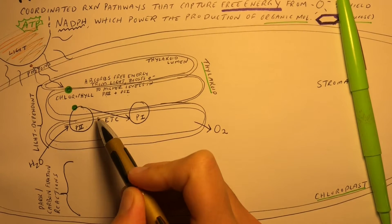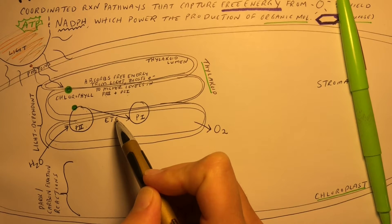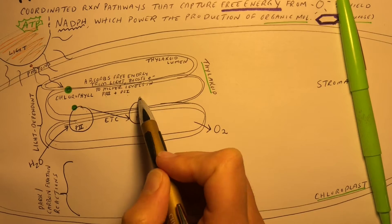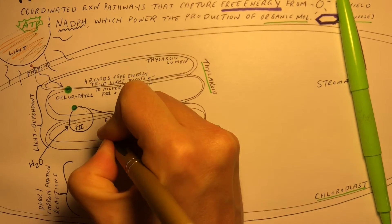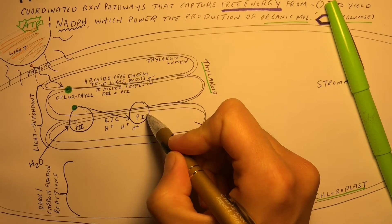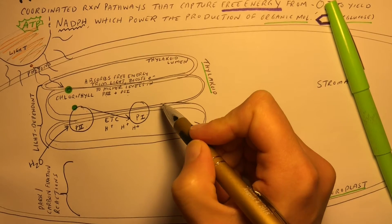As electrons are transferred between the molecules in the sequence of reactions in the electron transport chain, we get a gradient of hydrogen ions across the thylakoid membrane. After photosystem 1, we also have the production of ATP via ATP synthase.